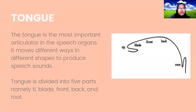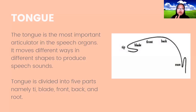Next is the third articulator: the tongue. The tongue is the most important articulator in the speech organs. It moves in different ways and different shapes to produce speech sounds. The tongue is divided into five parts: tip, blade, front, back, and root, as we can see in the picture.